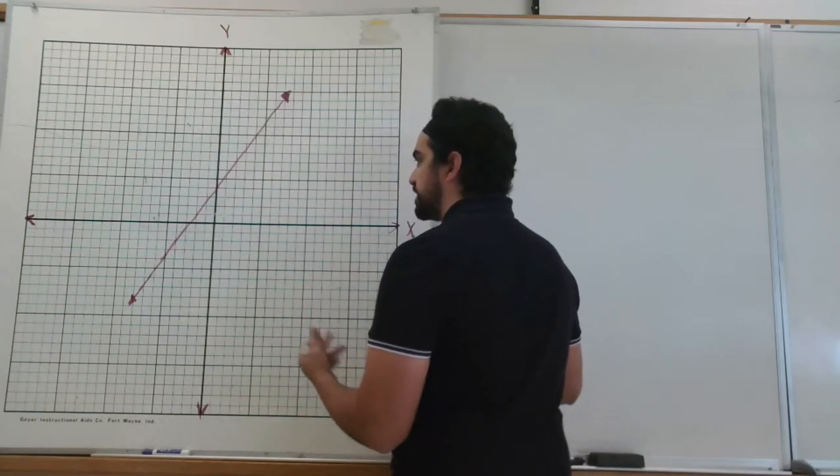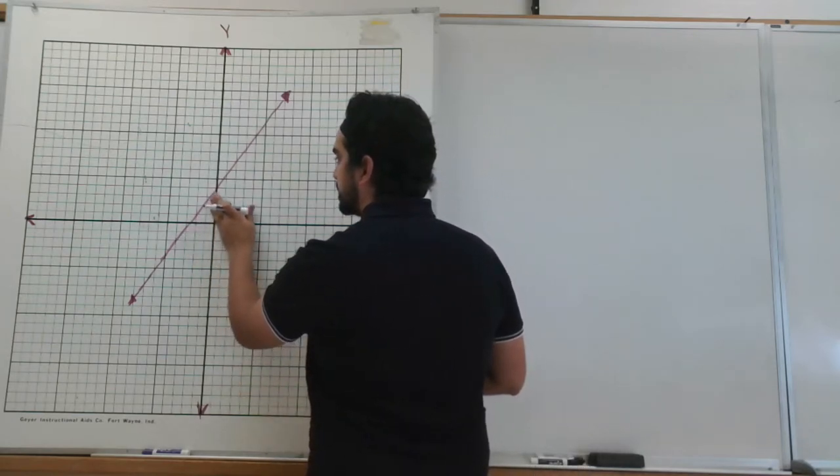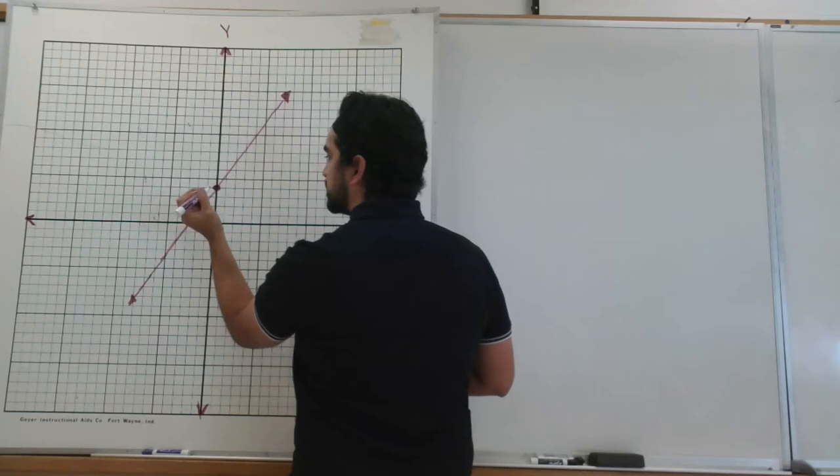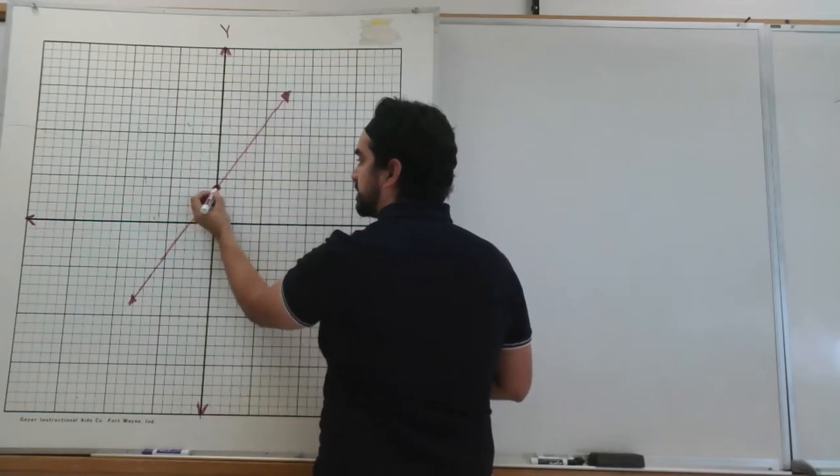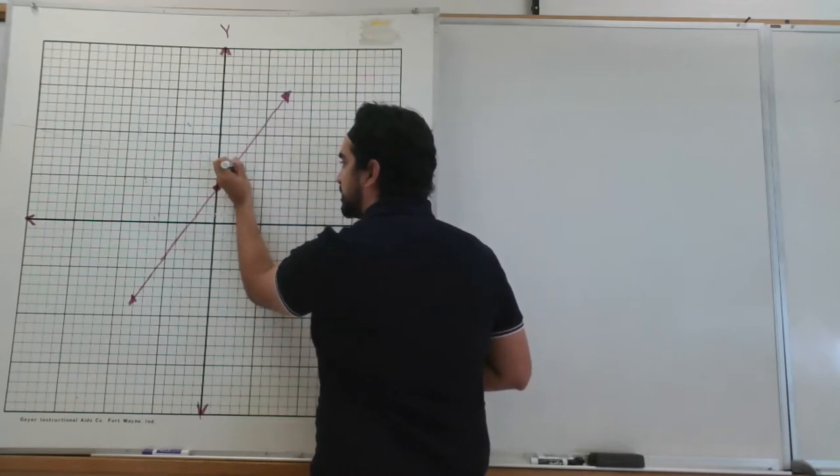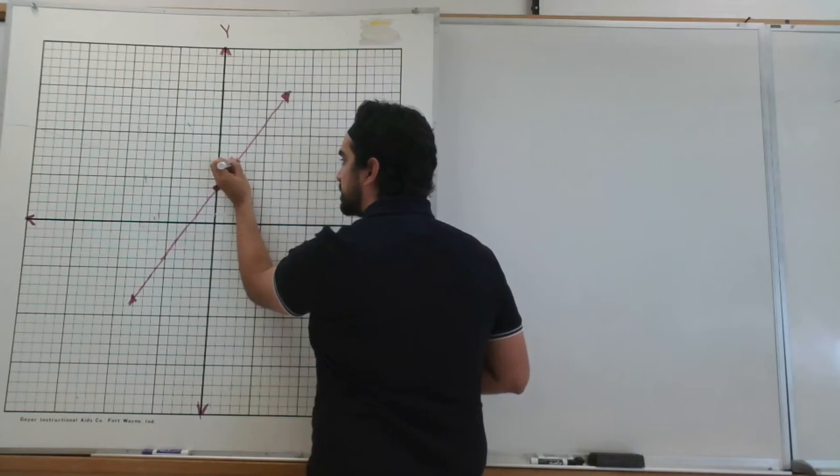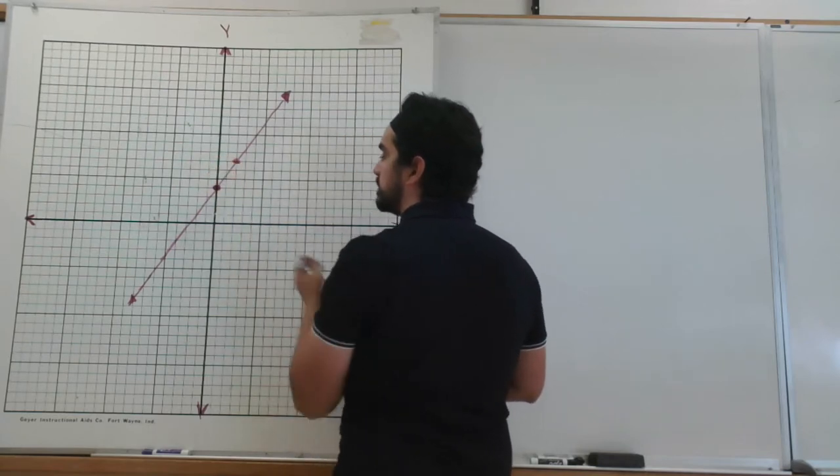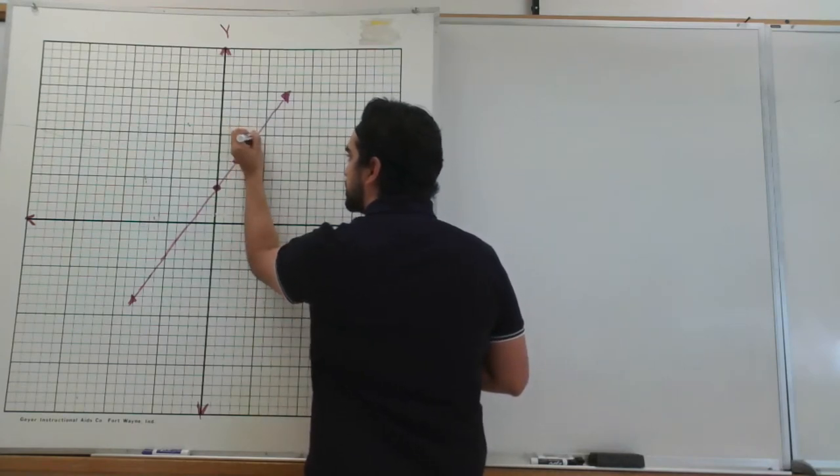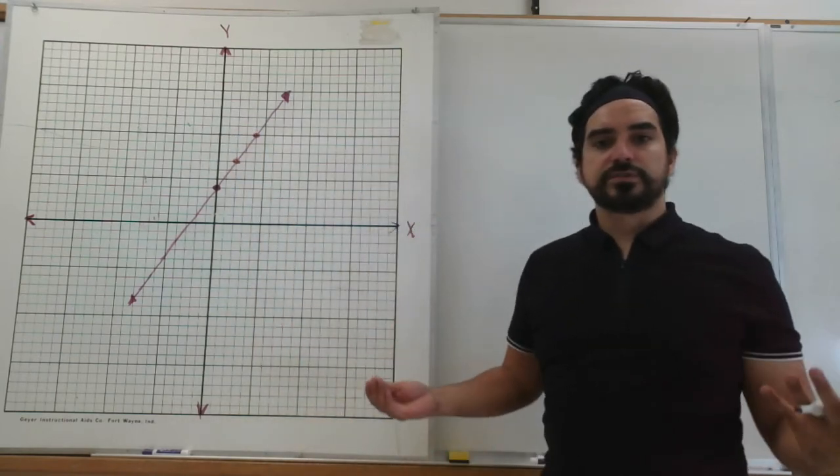So the first bullseye point I see is right here. And this is also my y-intercept. So I'm going to keep going up. The next one I see is right here. And then if you want, you can keep going up. And it's right here. So all of those are bullseye points.